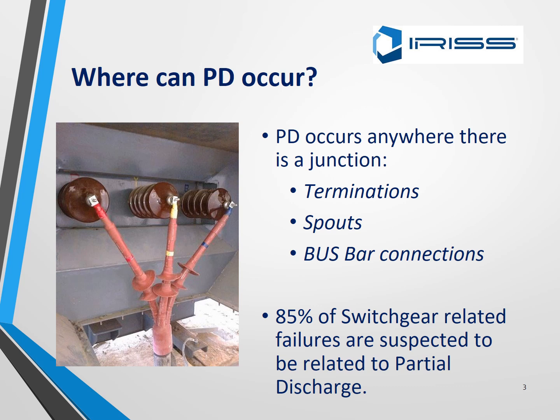Where can PD occur? PD occurs anywhere there is a junction or a man-made termination. The termination is always a weak spot — spouts and busbar connections. 85% of switchgear-related failures are suspected to be related to partial discharge.